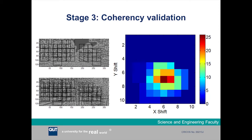Finally, in the third stage we perform a coherency validation. We examine the relative spatial shifts of all the matched patch pairs between the two images, and plot these spatial shifts on a two-dimensional histogram. If the spatial shifts from all the matched patches are consistent — revealed by a very sharply peaked 2D histogram — then we know that the images are likely a match.